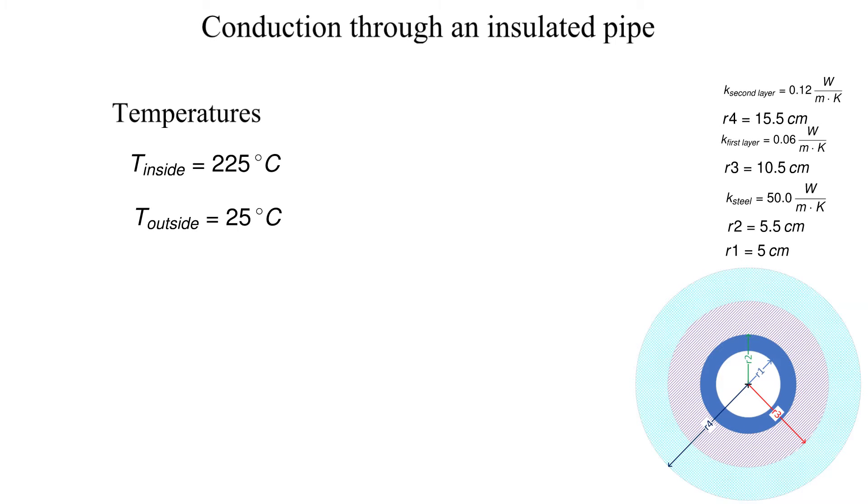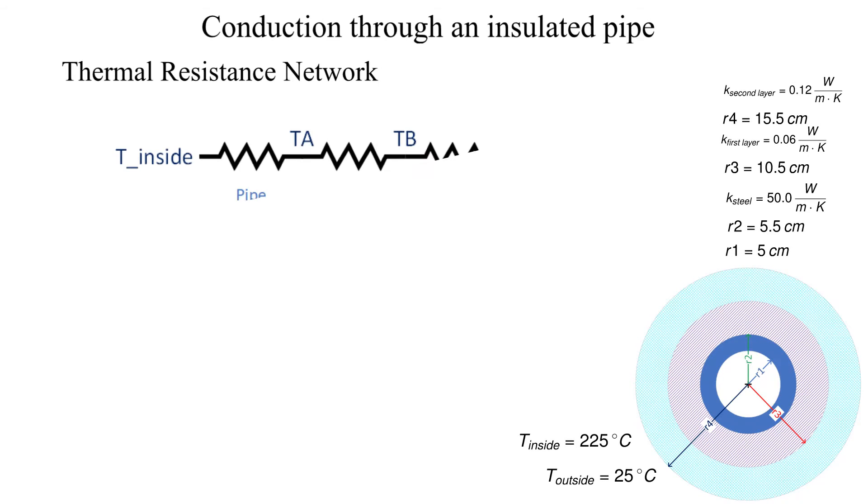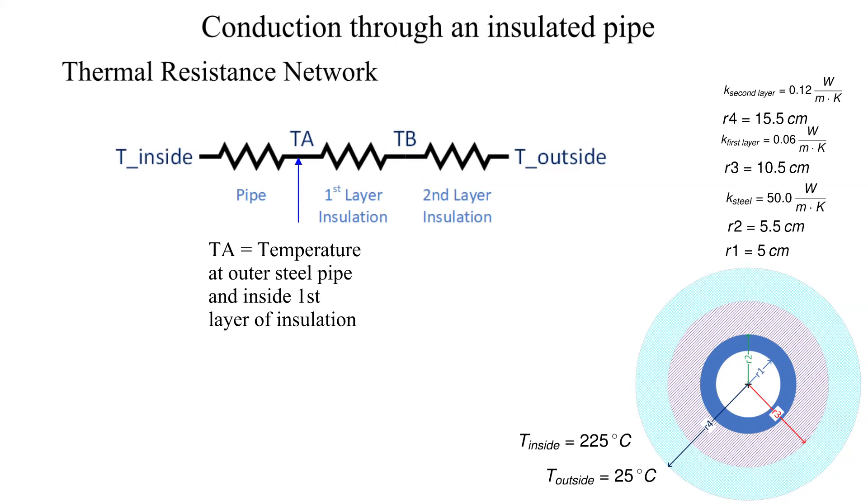Now let's draw our thermal circuit from the inside pipe wall to the outer surface. We denote the intermediate temperatures as TA and TB as shown. We also label the resistances R1, R2, and R3.